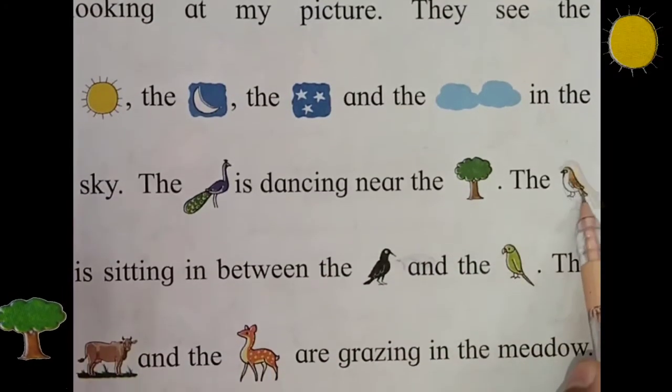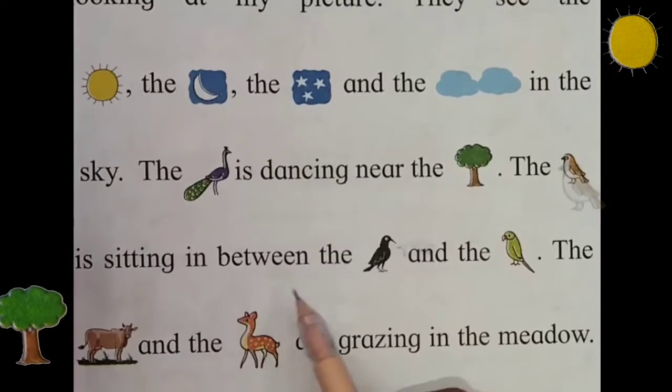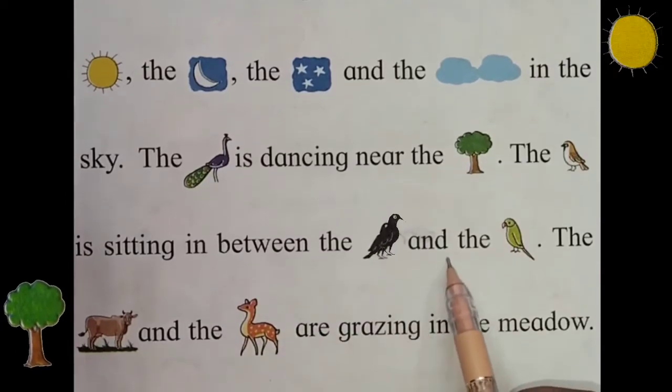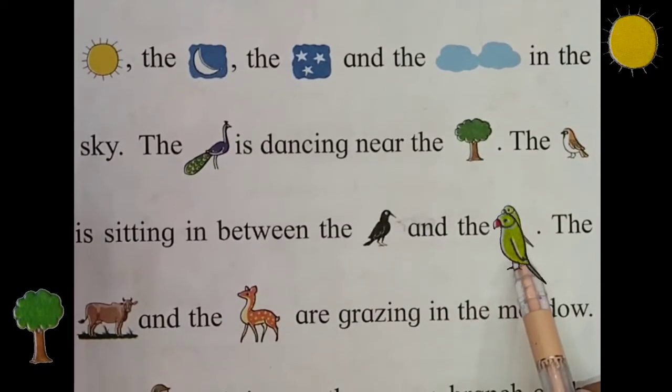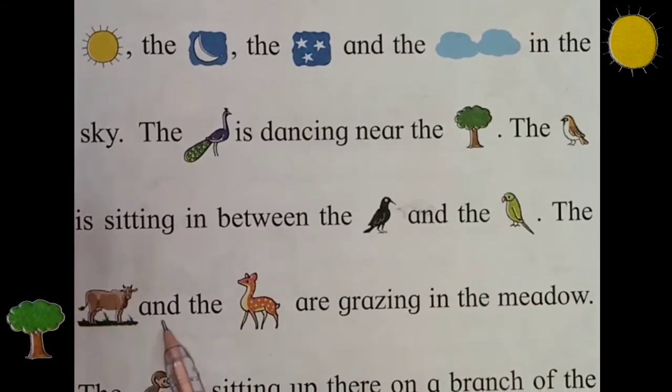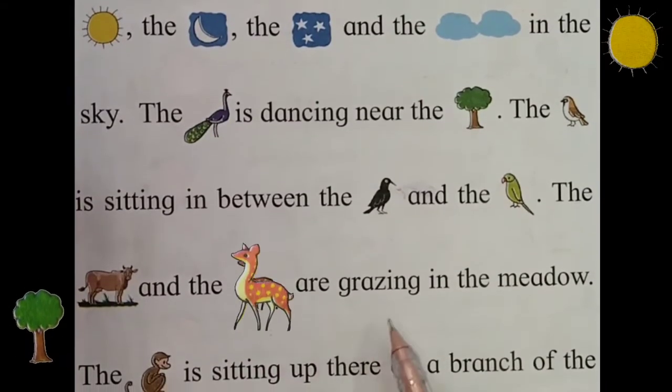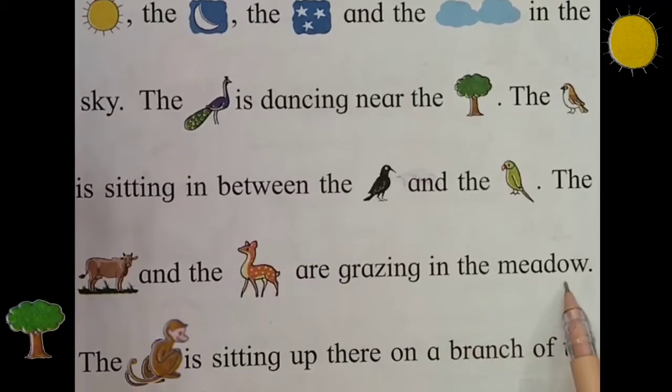The sparrow is sitting in between the crow and the parrot. The cow and the deer are grazing in the meadow.